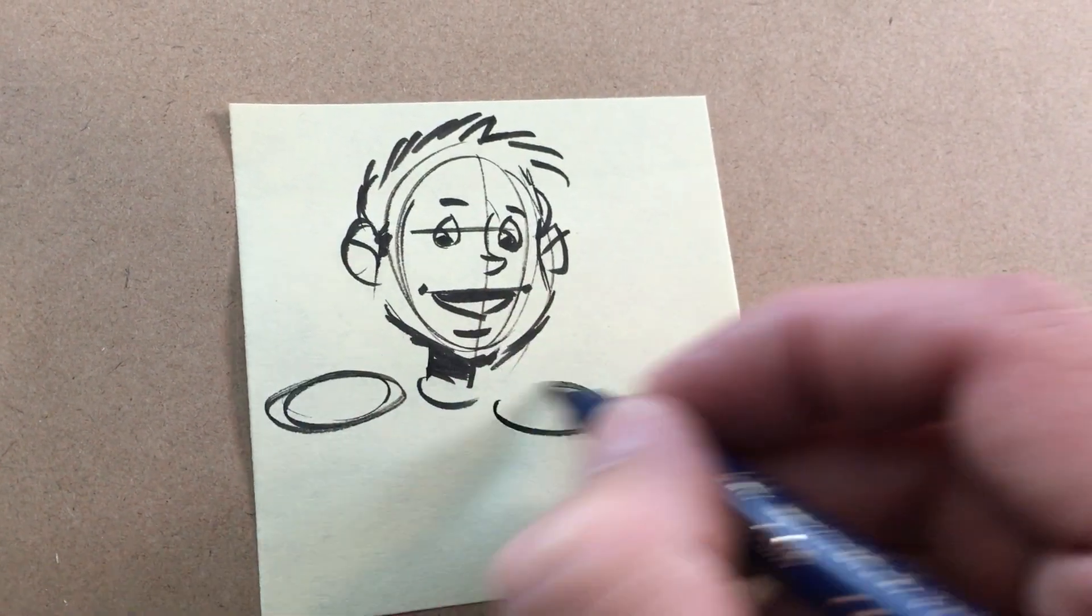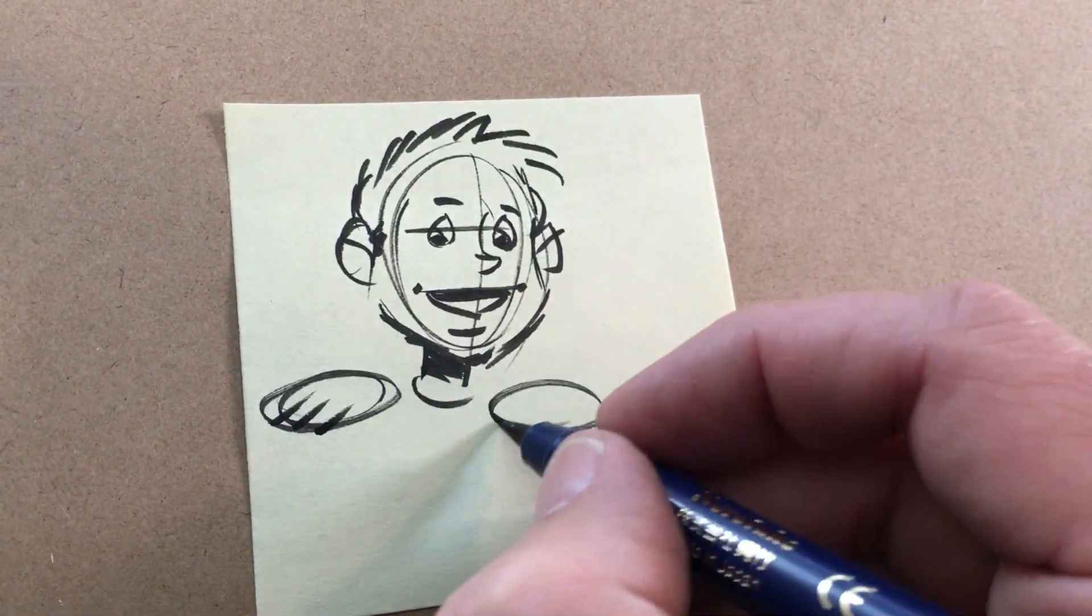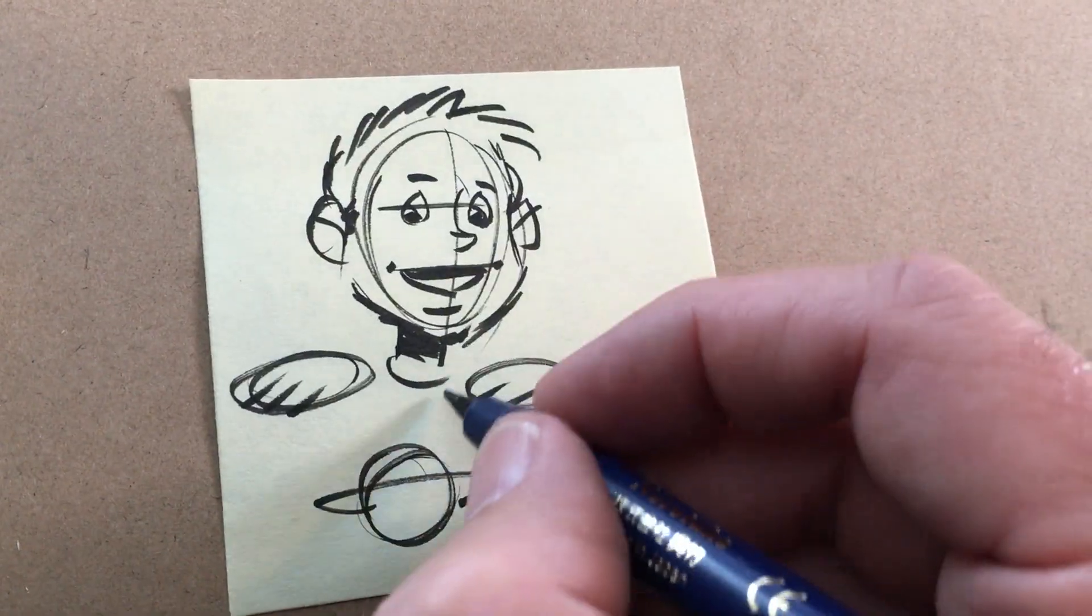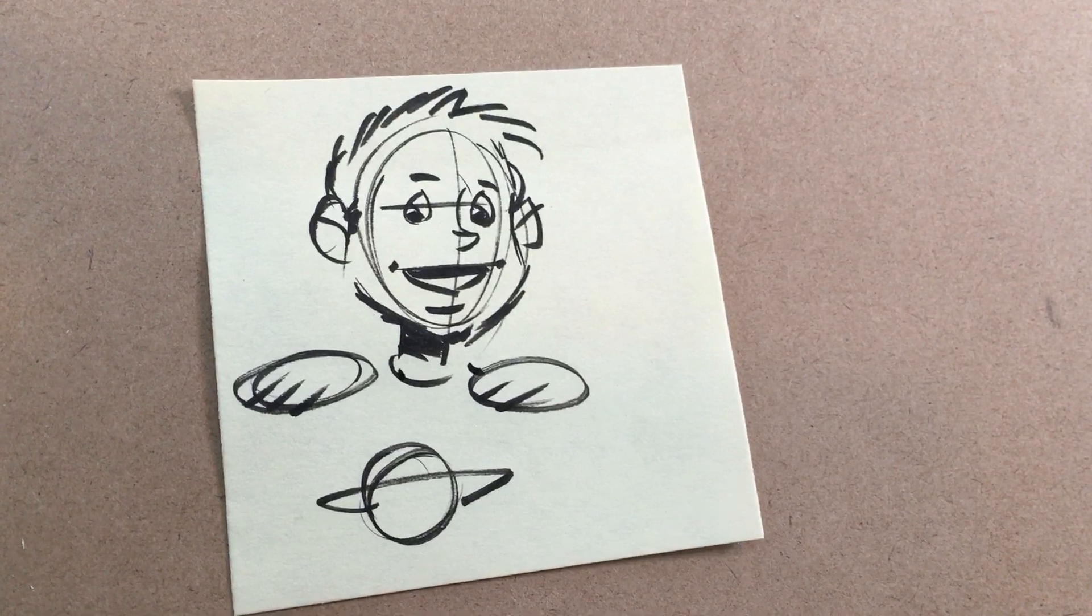Older people have fatter necks and smaller ears. He's got these kind of gold epaulets on here, he's got a Saturn emblem on his chest, and that is your 60 Second Sticky Doodle.